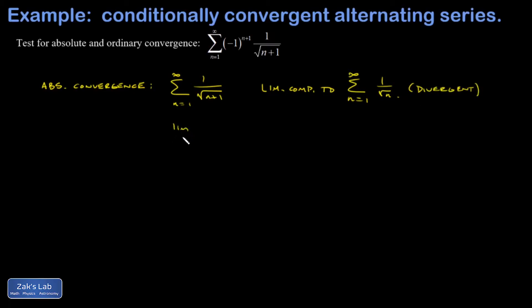So my limit comparison goes like this. The limit as n goes to infinity. The terms of my series divided by the terms of the one I'm comparing to, and I just multiply by the reciprocal, and that gives me the limit as n goes to infinity of root n over n plus 1.